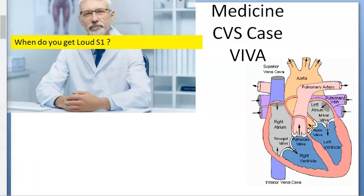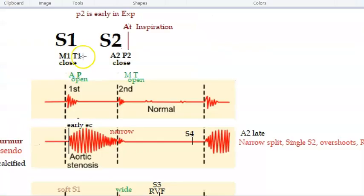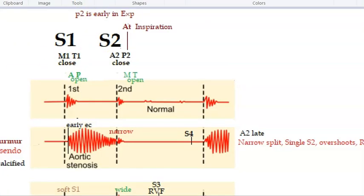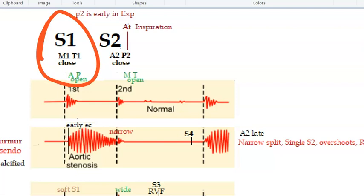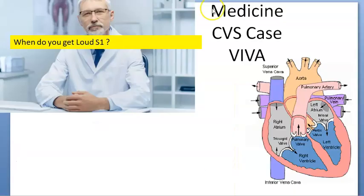When do you get loud S1? S1 is because of closure of mitral valve and tricuspid valve — M1 and T1. So if S1 has to be loud then the mitral or tricuspid valve will have to close loudly. This happens because of stenosis of the valve — mitral stenosis or tricuspid stenosis — or if there is hyperkinetic circulation. And in children it is normal; normally S1 is loud in children.